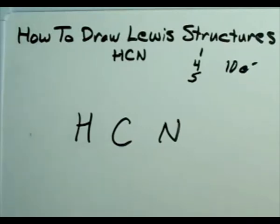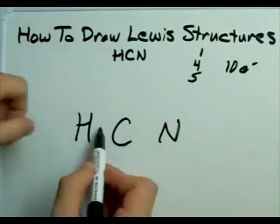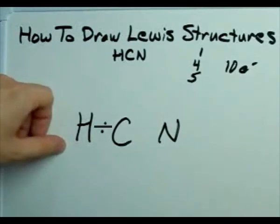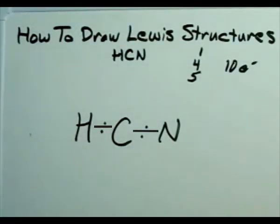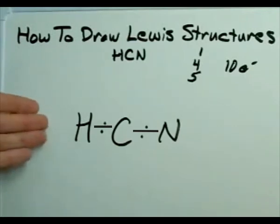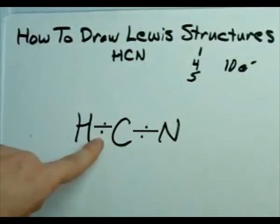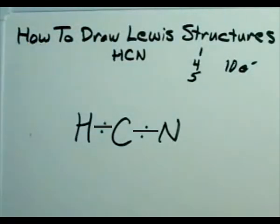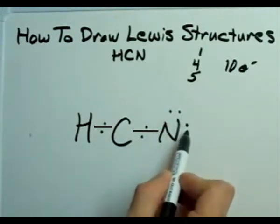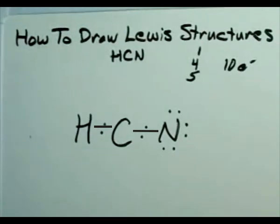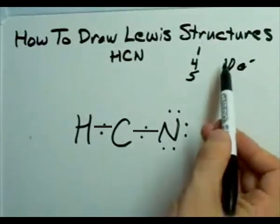Step 3 is adding a bonding pair of electrons in between every 2 atoms. In this case, hydrogen and carbon need to be bonded together, so we have to put 2 electrons there. Carbon and nitrogen have to be bonded together — we put 2 electrons there. Step 4 is to add the rest of your electrons to the outer atoms until they satisfy the octet rule. Hydrogen is an exception to the octet rule — it only needs 2 electrons around it, and it already has that, so that's done. Nitrogen needs 8 to satisfy the octet rule. We've already put down 1, 2, 3, 4 electrons — let's put down 5, 6, 7, 8, 9, 10. We now have 10 electrons here, the number that we need in the molecule.